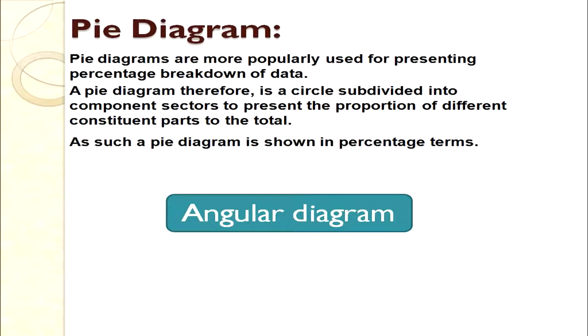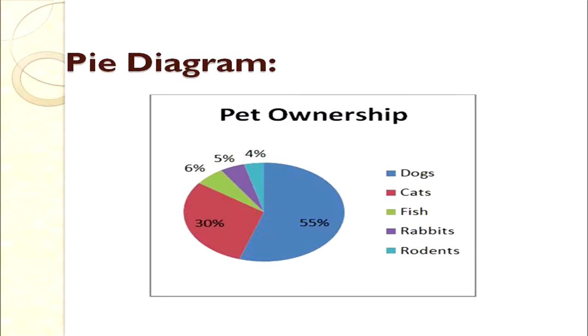Let's start with pie diagram. A pie diagram is an angular diagram that popularly displays or shows percentage breakdown of data. A pie diagram is a circle subdivided into component sectors to present the proportion of different constituent parts to the total. Looking at a sample pie chart showing pet ownership, it is clear that mostly people want dogs as pets, then cats, fish, rabbits, and rodents.